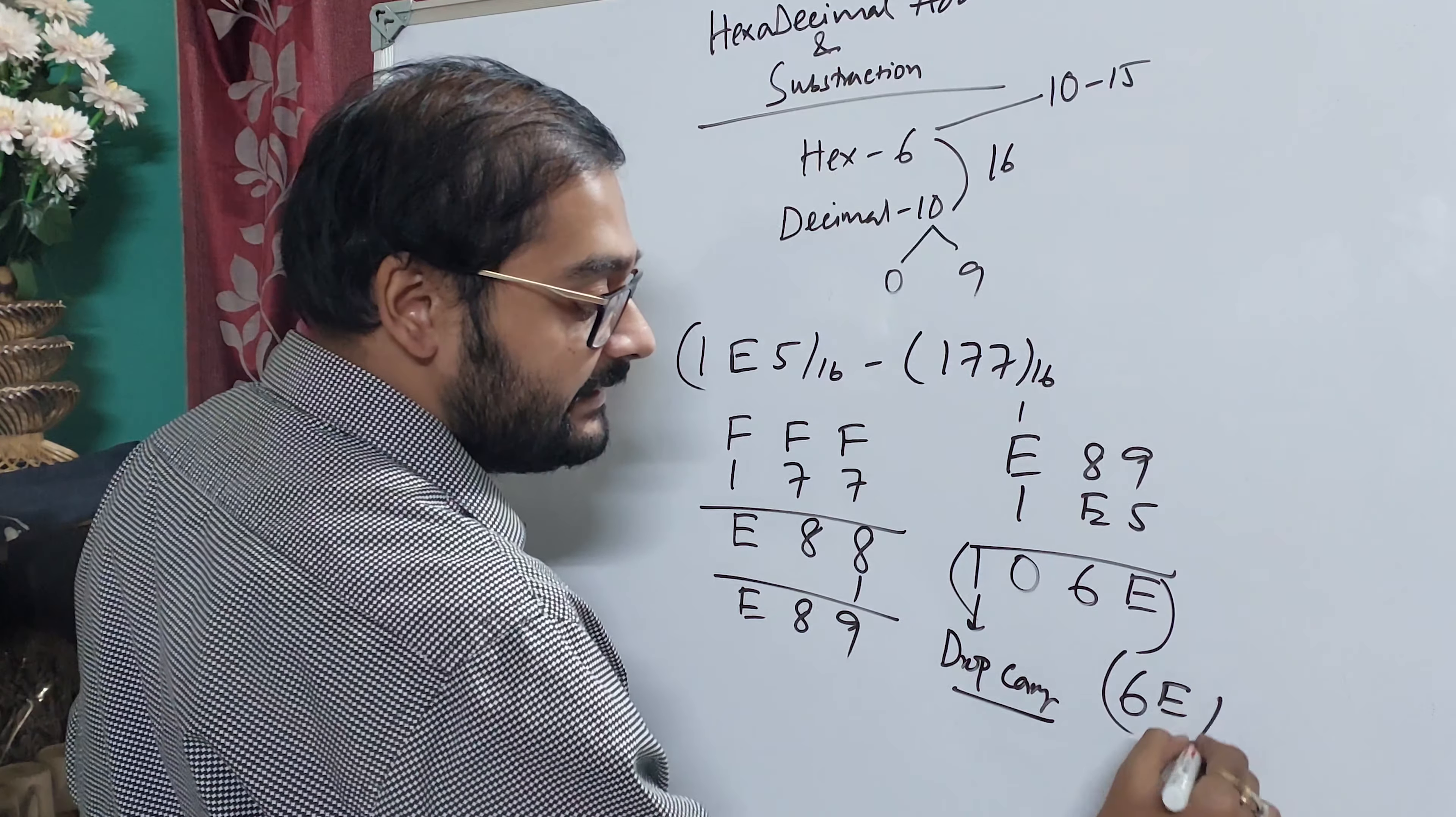15's complement means FFF minus this 177. What is FFF minus 177? That is E88. The 15's complement plus 1 is E89. We can add E89. This is the E89. We can add this to 1E5.